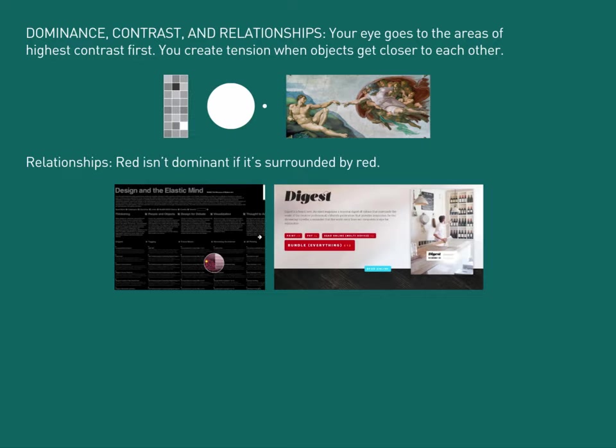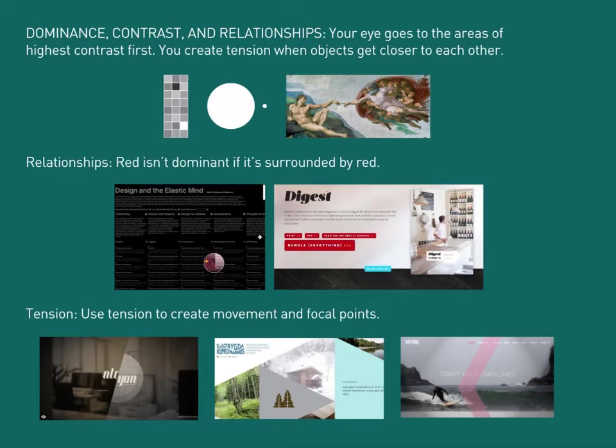Tension is like the Michelangelo God painting in the Sistine Chapel. When two objects get closer and closer together, it creates this visual tension. Sometimes tension is good and sometimes tension is bad. Tension typically makes your eye go to that area. So if you want to draw the viewer's attention to that area, make those objects come closer together.